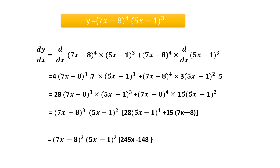Now let us take another question. The question states y = (7x − 8)⁴ · (5x − 1)³. Here again we can distinguish that (7x − 8)⁴ is the first function u and (5x − 1)³ is the second function v. So we write dy/dx as the derivative of the first function multiplied by the second function as it is, plus the first function as it is multiplied by the derivative of the second function.